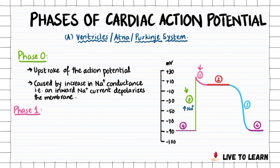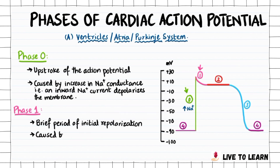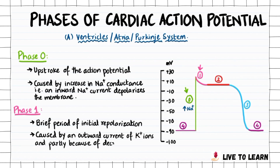Phase 1, the part shown in pink on the graph, represents a brief period of initial repolarization. Initial repolarization is caused by an outward current of potassium ions and partly because of a decrease in sodium conductance.